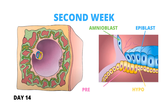Finally, if we zoom in on the bilaminar germinative disc, we observe its two components: the epiblast and the hypoblast. In the epiblast we can see the amnioblasts. In the hypoblast, some cells have become cylindrical and make a certain area thickened. This area is known as the precordial plate, which indicates the location of the future mouth and also serves as an organizing element of the head of the embryo.